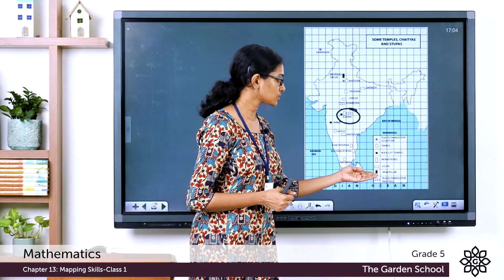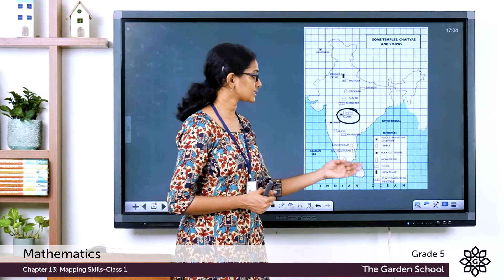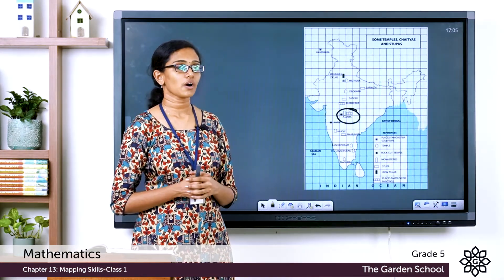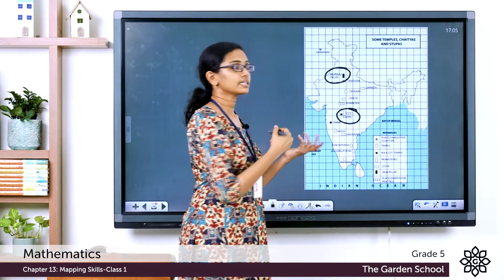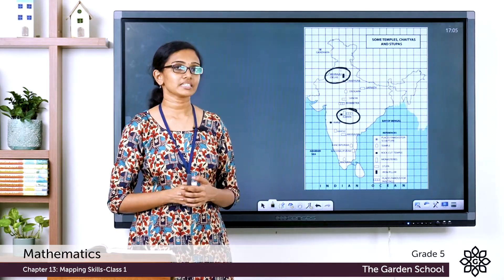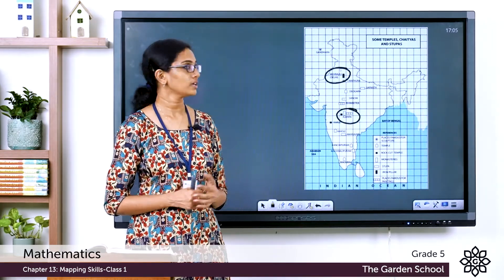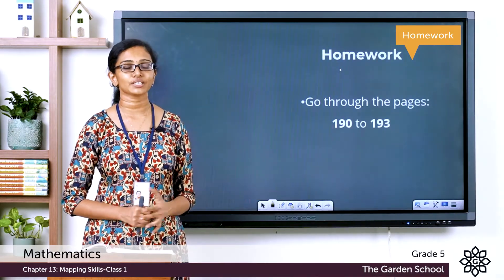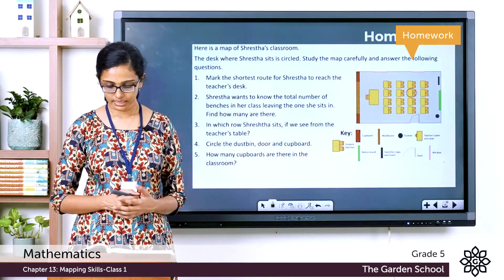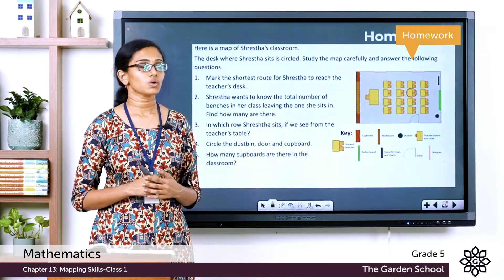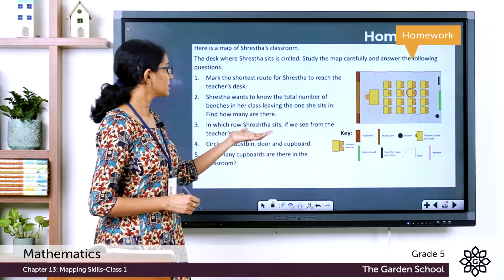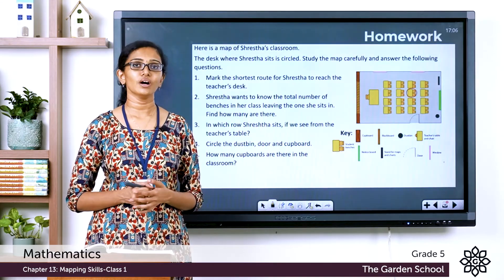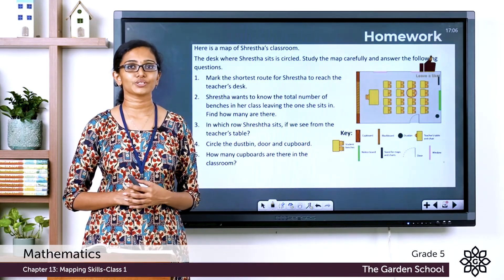The third question: where do you find an iron pillar in India? Look at the symbol for iron pillar in the key — the second last symbol — and find the place on the map. You'll find it is Meroli in Delhi. There are three more questions you may go through yourself. Go through all topics from pages 190 to 193 of your textbook. That's all for today — we'll see you in the next class with a new topic. Bye!